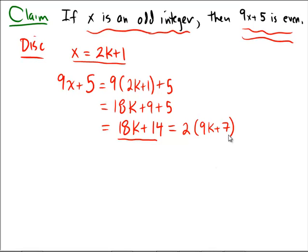And since we're working with integers here, k is an integer, 9 times k is an integer, and 7 is also an integer. So this element right here is also going to be an integer. So we have that 9x plus 5 is equal to 2 times an integer. And this is what's going to lead us towards our proof.